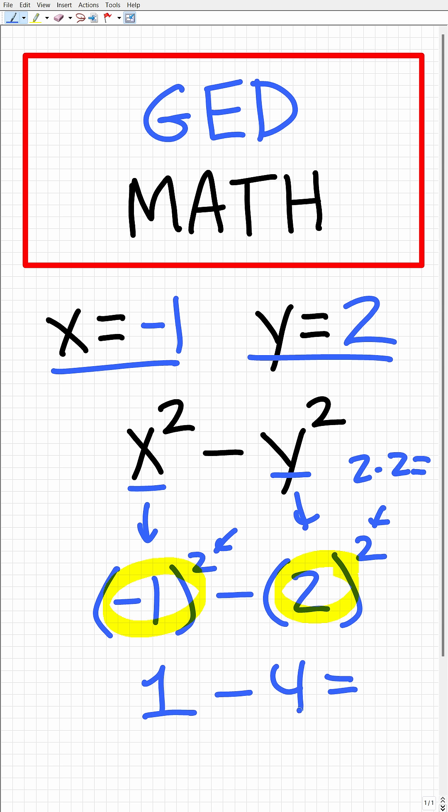So now we're down to 1 - 4, which hopefully you see is -3 because 1 - 4 is the same thing as 1 + (-4). We have a larger negative number than this positive number, meaning our final answer is -3.